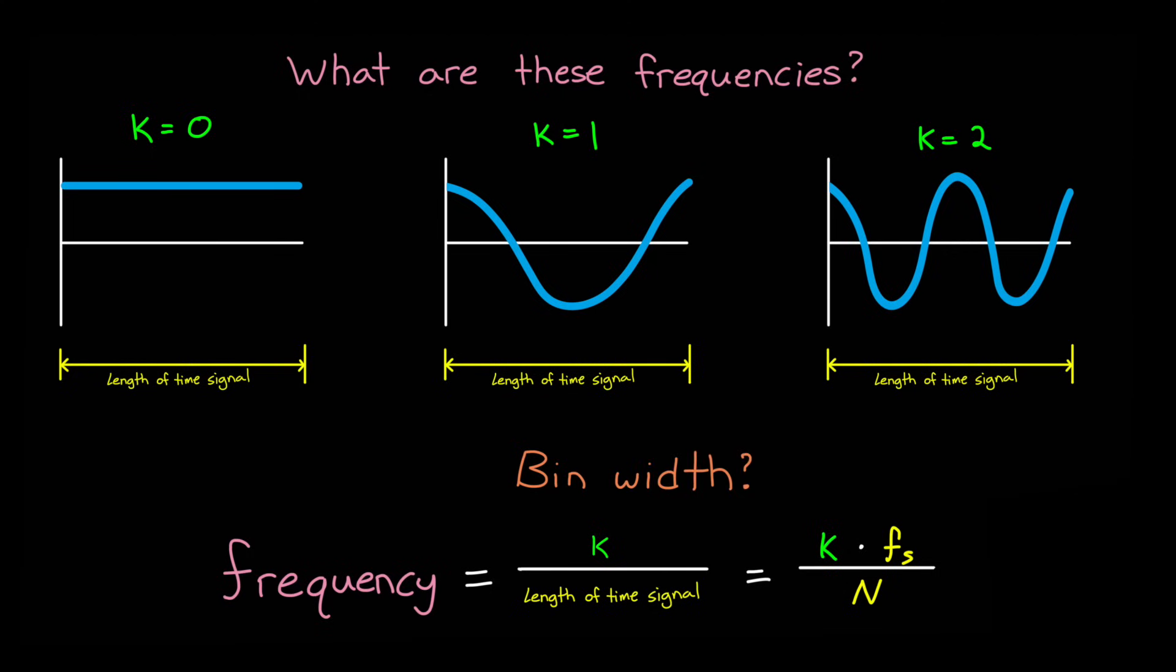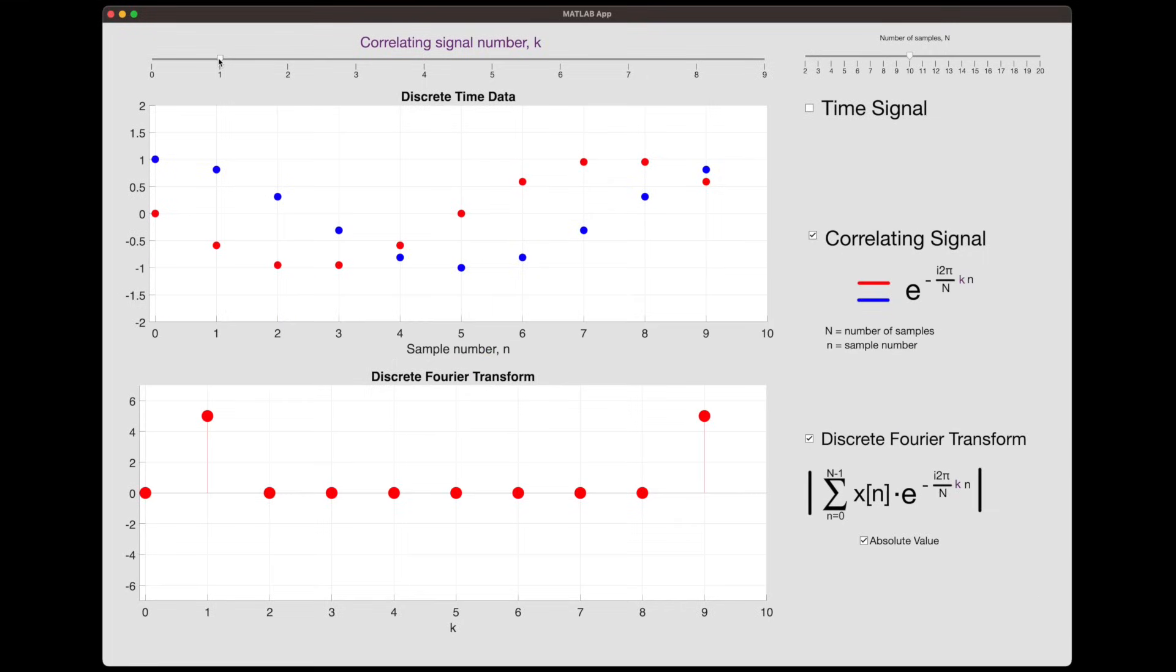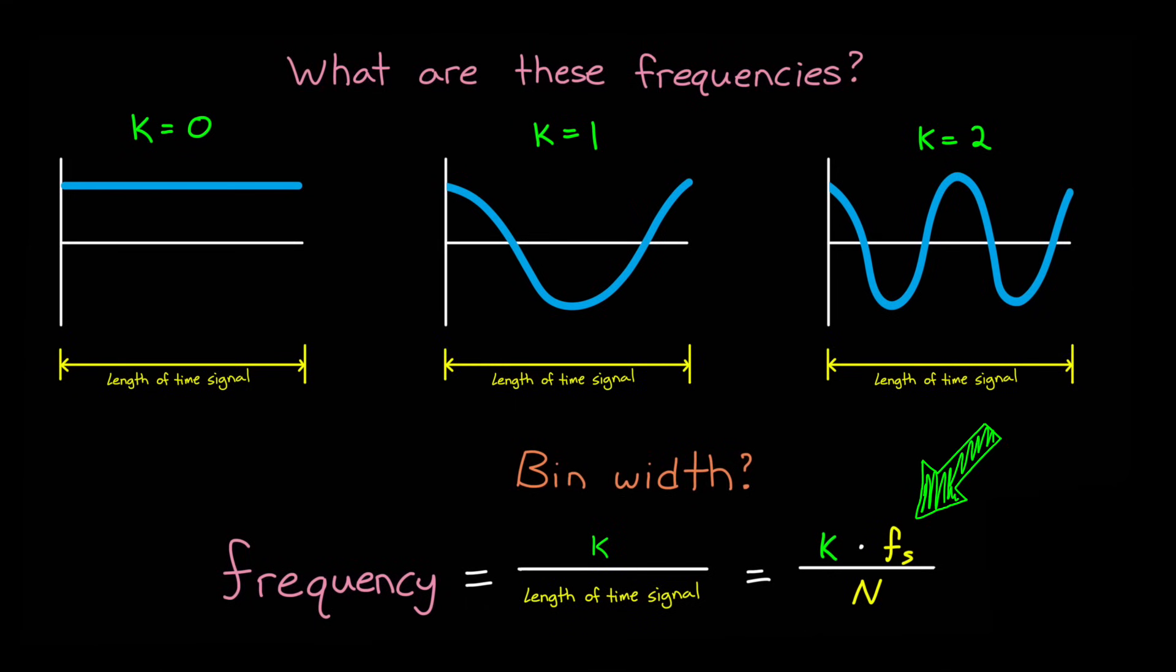So we can plot the FFT against frequency using this conversion. Now, you might also hear the term bin width. And this is the width of each frequency bin in the FFT. So if we go back to the spectrum that we calculated here, bin width is just the width in frequency between each of these samples. So how far is it between sample zero and sample one, and then from sample one to sample two, and so on. And we already know this answer. We just set k equals to one in this equation, and we get the width between two samples.